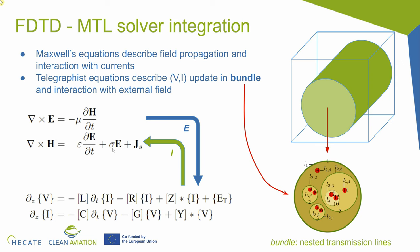So which is the connection between these two domains? In the Maxwell equations, we have a term which is the current density. And in the telegraphic equations, we have a term which is the external field. This is going to be the connection between these two domains. This external field in the transmission line equations will correspond to the field propagated by the field domain — by the Maxwell equations. And the current density term in the Maxwell equations will be the current resulting from solving the telegraphic equations.